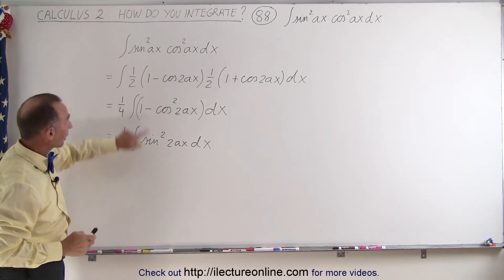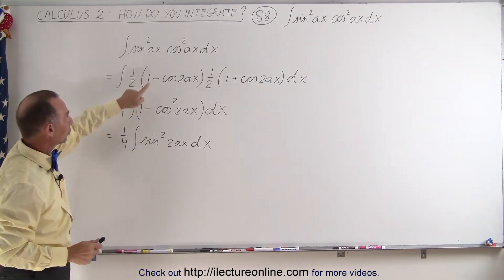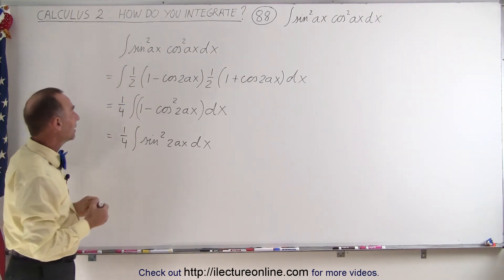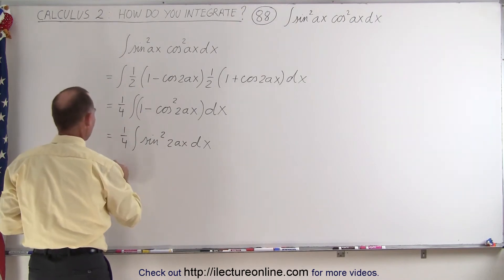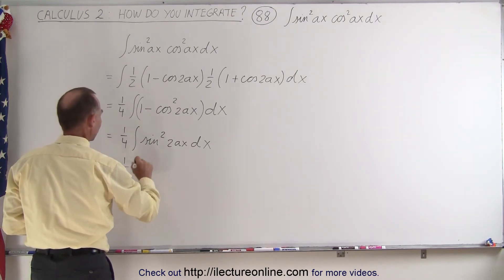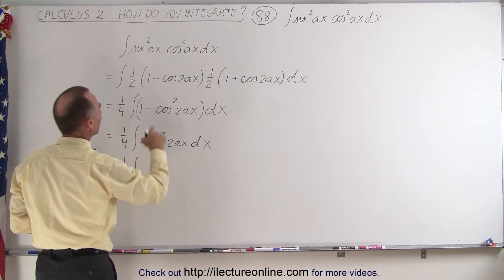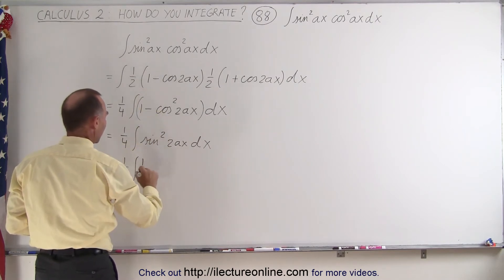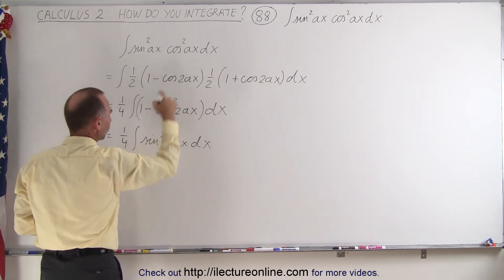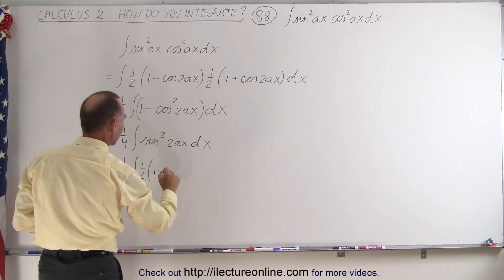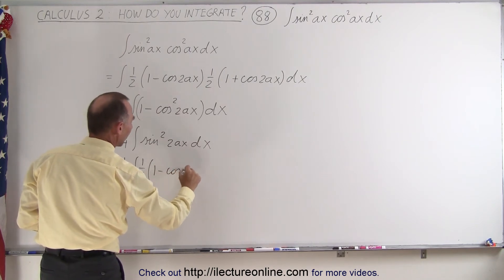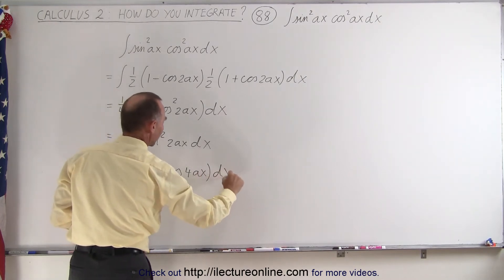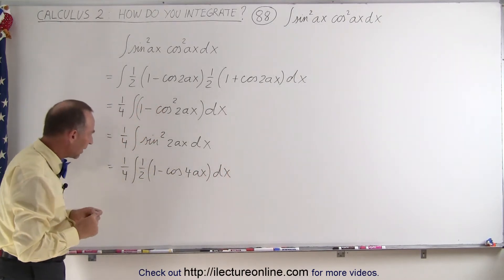Now we have the sine square again, like with that head over here, so we're going to use the same identity again. Now this can be written as 1 quarter times the integral, instead of the sine square, it'll be 1 half times 1 minus twice the angle again, so 1 minus the cosine of twice the angle, which is 4Ax times dx. So now we're ready to integrate this.